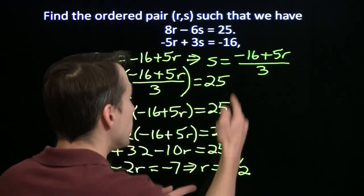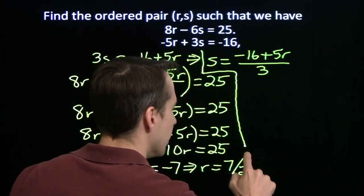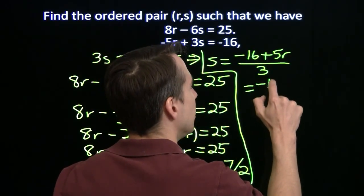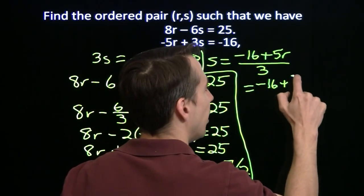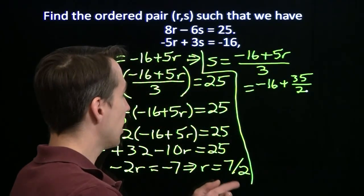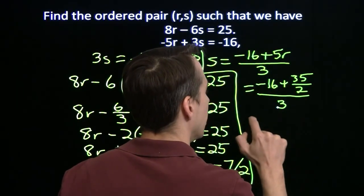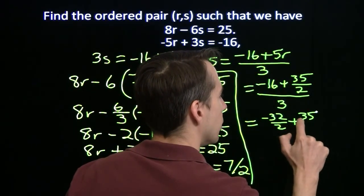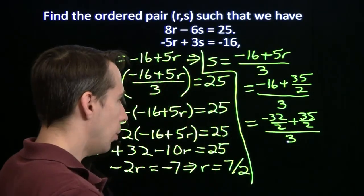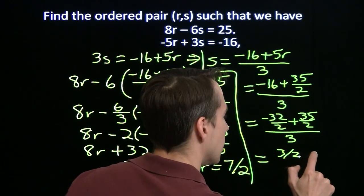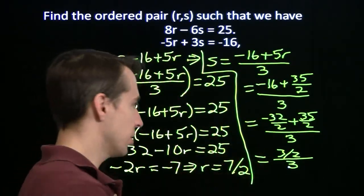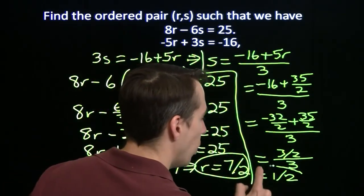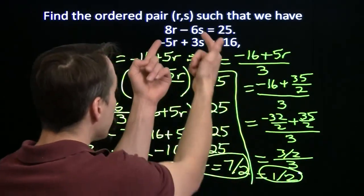But we're not done. We need s as well. We've got to substitute this r back up into here. I'm going to substitute this 7 halves back into here to figure out what s is. We'll get negative 16 plus, that's 35 over 2. 7 halves times the 5, all of this divided by 3. Okay, this is negative 32 over 2, plus 35 over 2, all over 3. Almost there, this is 3 halves. Still divided by 3. 3 halves divided by 3, well that's just 1 half. And now we've got our solution. r is 7 halves, and s is 1 half, and of course, we've still got to check it.